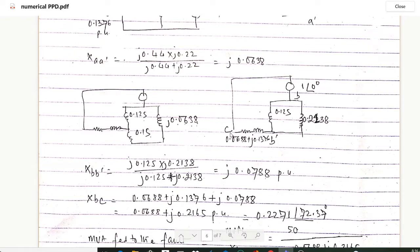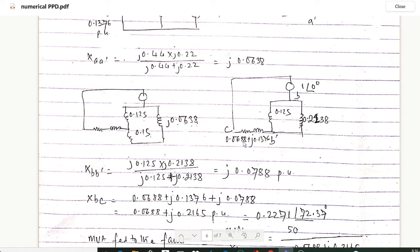Defining point B and B', X_BB' is found by placing the appropriate branches in parallel, giving j0.0788 per unit. Then X_BC from point B to C is obtained by adding the feeder impedance 0.0688 + j0.1376 to the parallel combination j0.0788, giving X_BC = 0.2271 at an angle of 72.37 degrees.